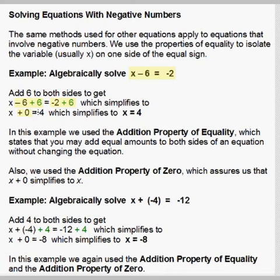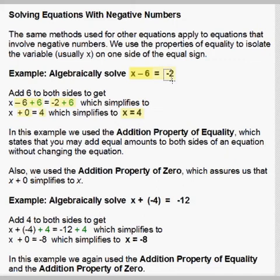On the right side, negative 2 plus 6 is 4. And x plus 0 can be replaced by just x, so we get x equals 4, our solution. We can check by plugging it back into the original equation: 4 minus 6 does indeed equal negative 2. We use the addition property of equality to add to both sides, and the addition property of 0 to rewrite x plus 0 as just x.